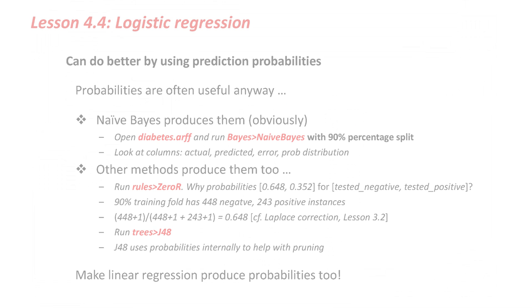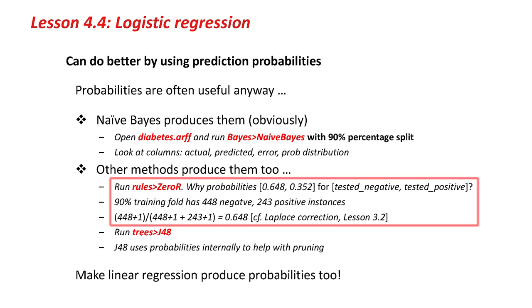The reason why the numbers are like that, if you look at this slide here, is that we've chosen a 90% training set and a 10% test set. The training set contains 448 negative instances and 243 positive instances. Remember the Laplace correction in Lesson 3.2? We add 1 to each of those counts to get 449 and 244. That gives us a 65% probability of being a negative instance. That's where these numbers come from.